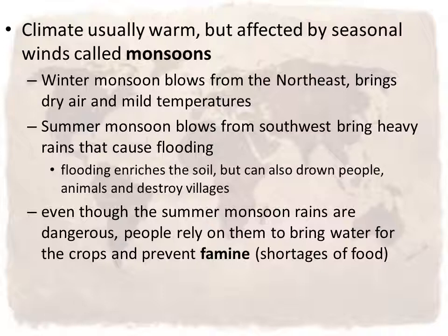This flooding enriches the soil because the river overflows and brings up minerals onto the farmland, but it can also drown people and their animals as well as destroy villages. So even though the summer monsoon rains are dangerous, people living in the Indus River Valley still rely on those rains to bring water for the crops and to prevent famine, which means shortages of food.